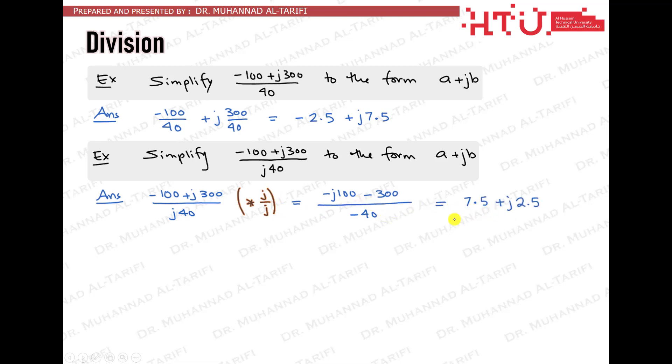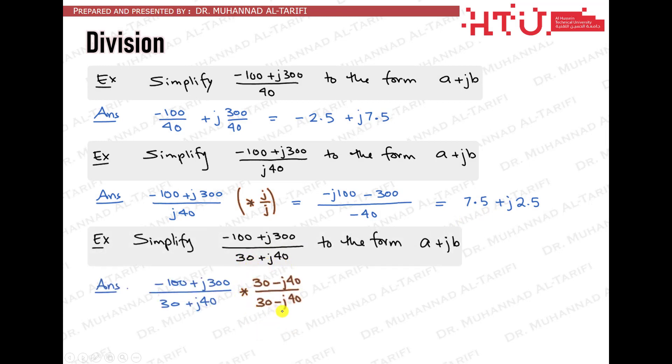But if the denominator has non-zero real and imaginary components, the problem becomes more tricky. In this case, we multiply by the conjugate of the denominator so that it becomes real as we discussed earlier. Of course, whatever you multiply at the denominator should also be multiplied at the numerator. Then all can be simplified and deduced to a single complex number in the form of a plus jb.